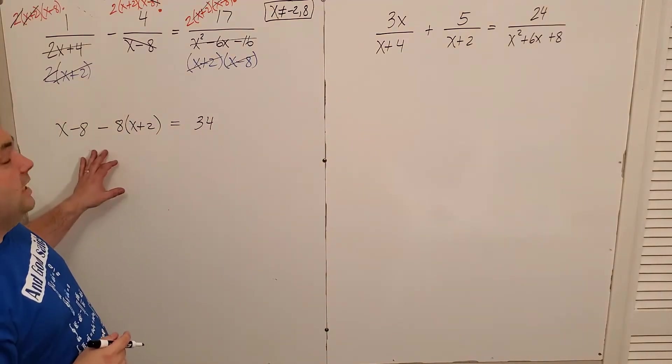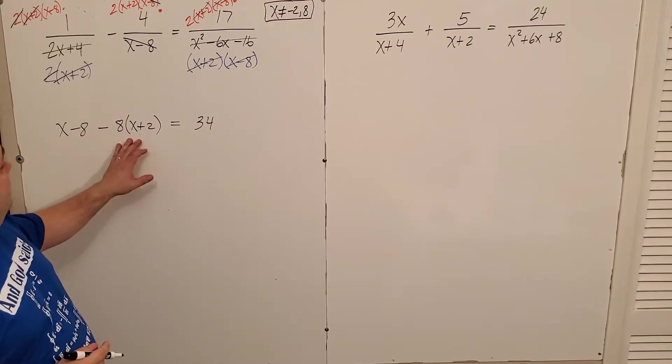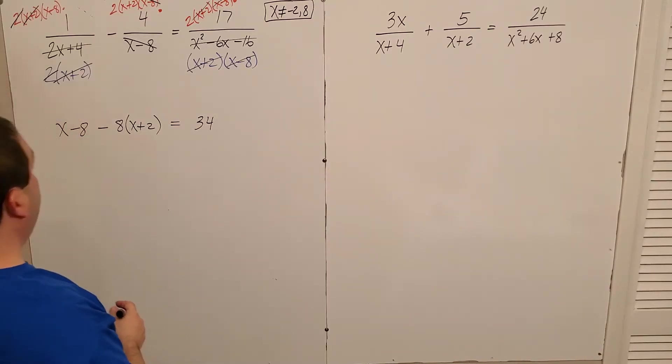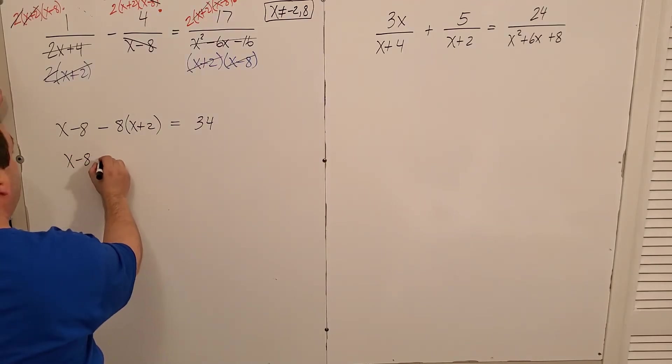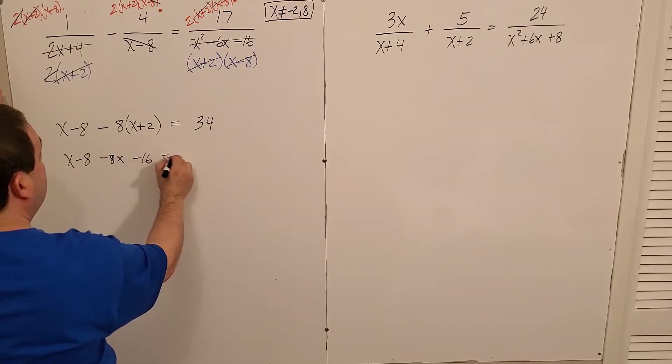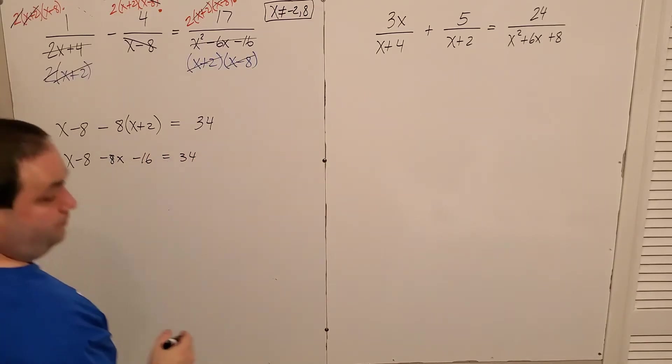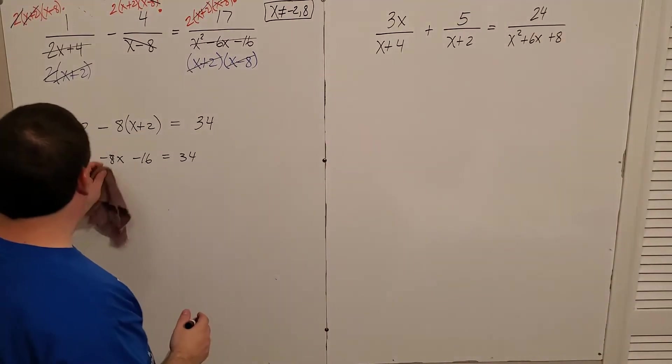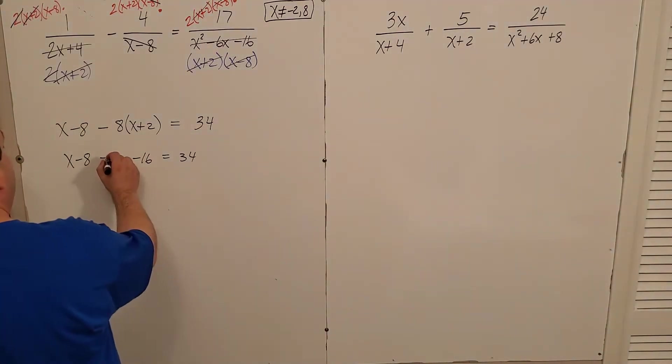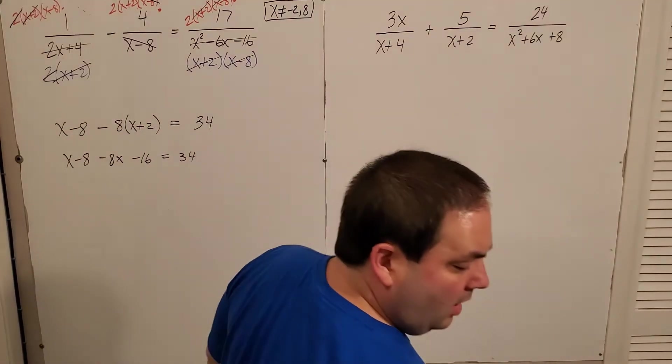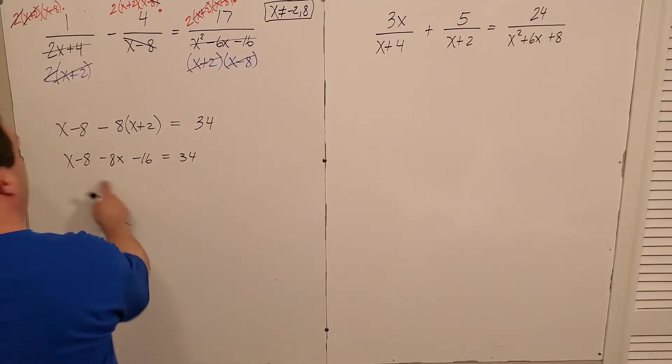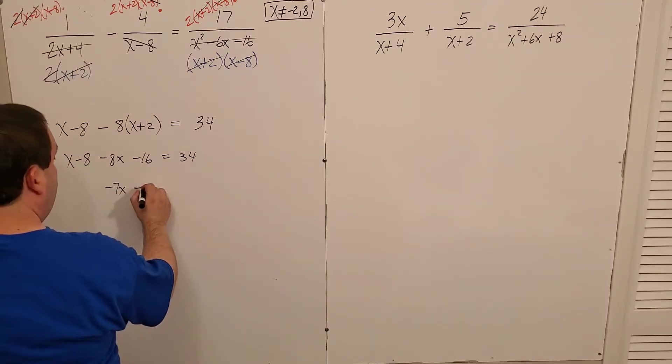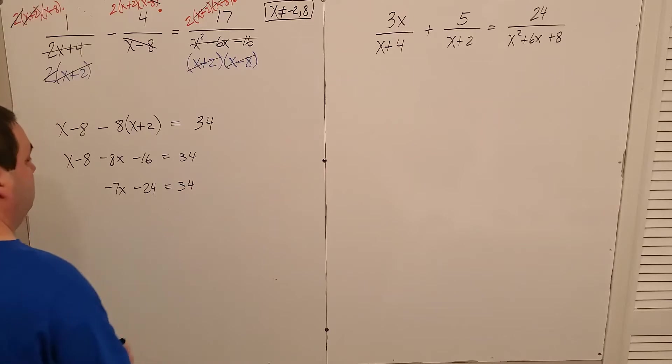I go ahead and distribute my negative eight. Minus eight x minus 16 equals 34, right? Let me fix that. Minus eight x there. I'm going to combine my terms on this side. So x minus eight x is negative seven x. Negative eight minus 16, negative 24.